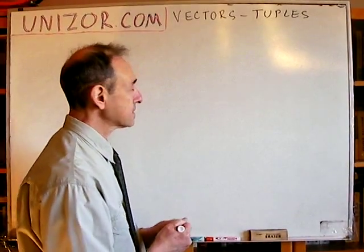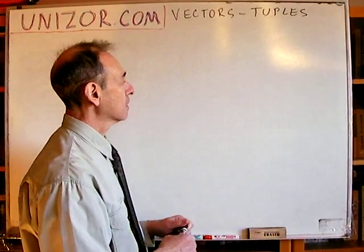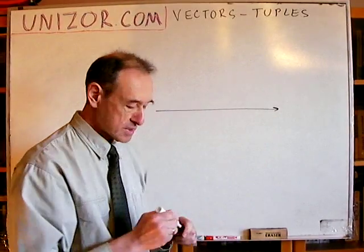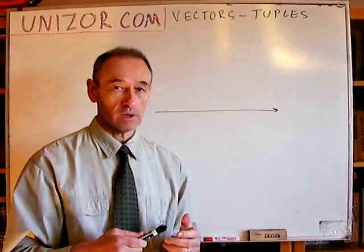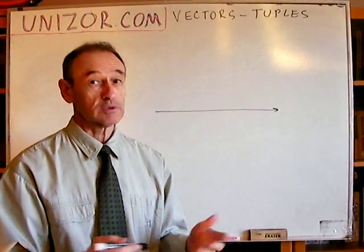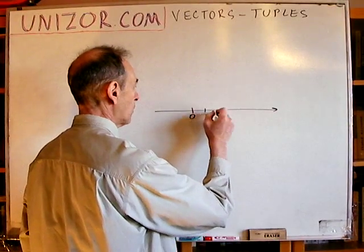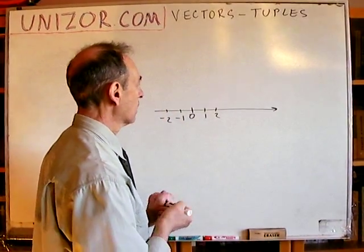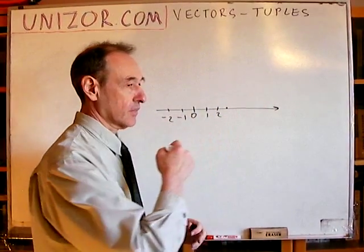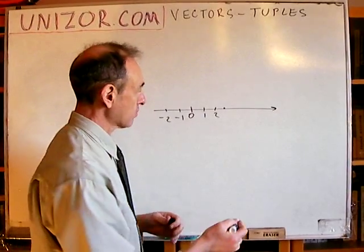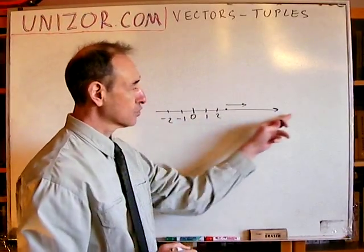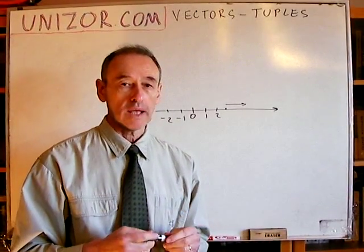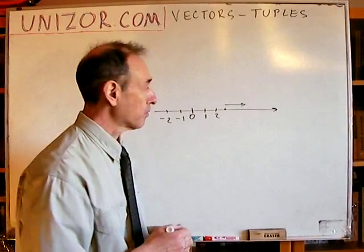Here's how it's approached. Let's consider for simplicity the movement of a point along a straight line. Here is the straight line. Whenever we're talking about numerical representation of physical movement, we need coordinates: a zero point, then 1, 2, minus 1, minus 2, etc. Here is the point somewhere, and it has a certain velocity moving on this particular straight line.